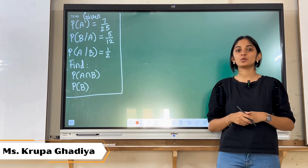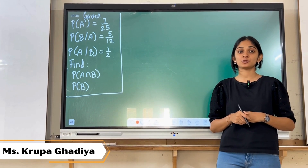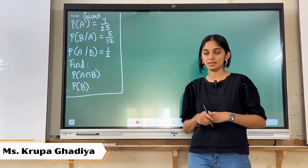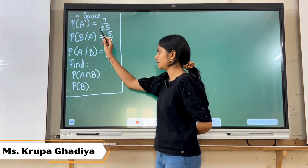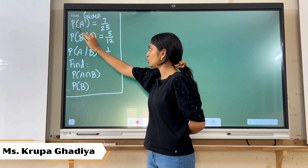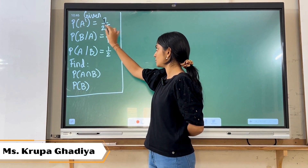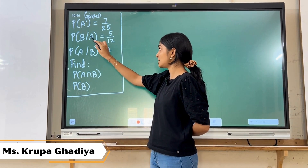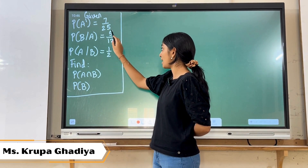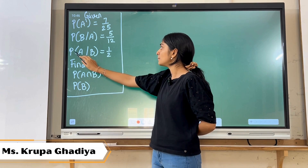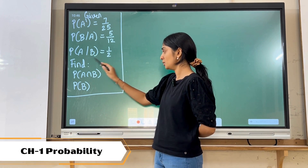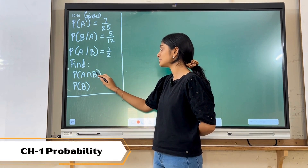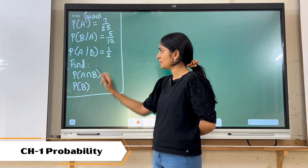Hello friends, today we are going to learn how we are supposed to calculate the sum of conditional probability. In this question, it is given that P of A dash is equal to 7 upon 25, P of B slash A is 5 upon 12, and P of A slash B is 1 upon 2. We are supposed to find A intersection B and P of B.